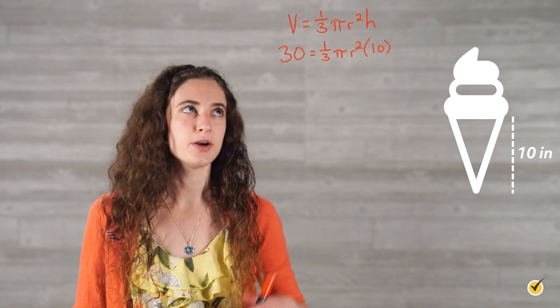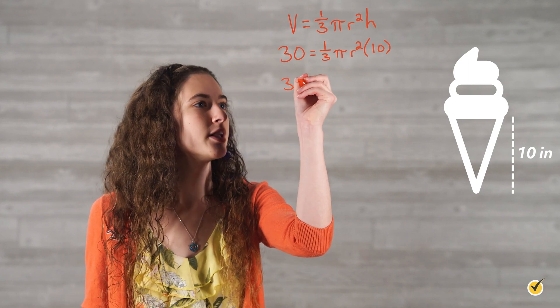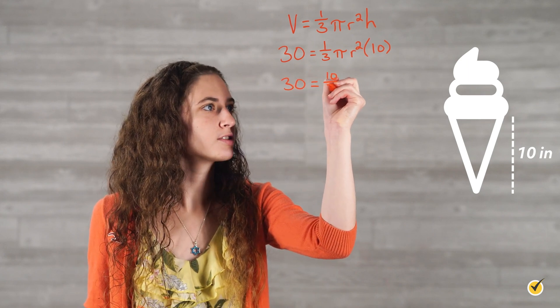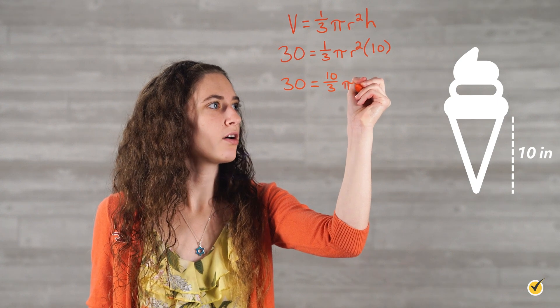If we rearrange a little bit, we'll get 30 equals 10 thirds pi r squared.